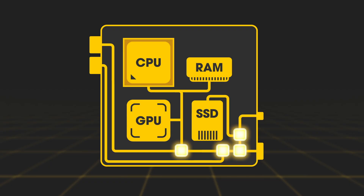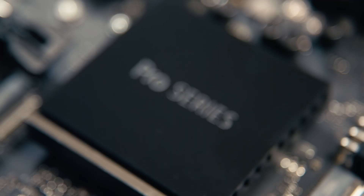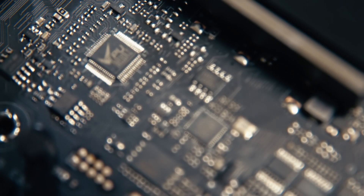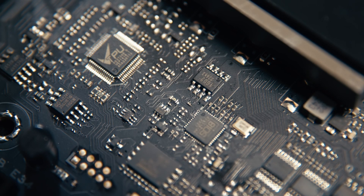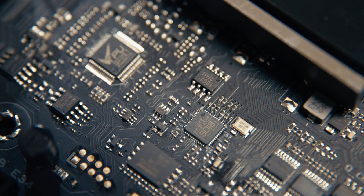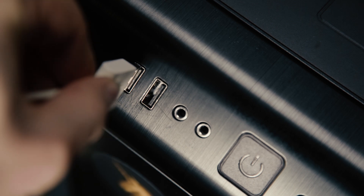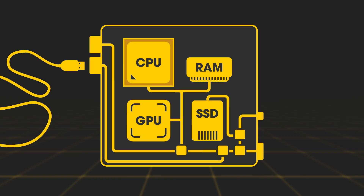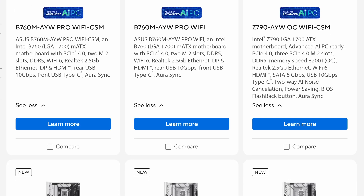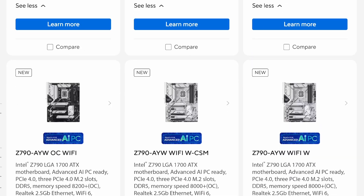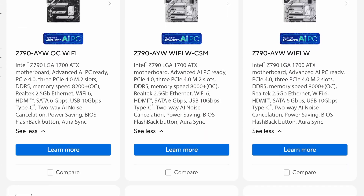The chipset is the brains of the motherboard — it's the combination of all the little chips that are soldered on. A chipset is innate to a given motherboard model and manages how the individual components talk to each other. When you plug in a USB device, for example, it plugs into the motherboard, whose chipset allows the CPU to receive its input.